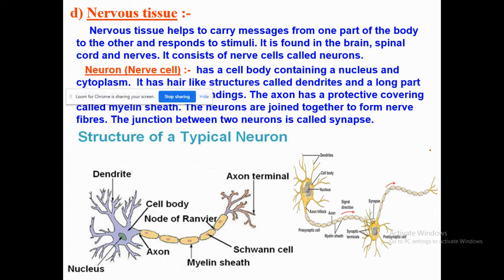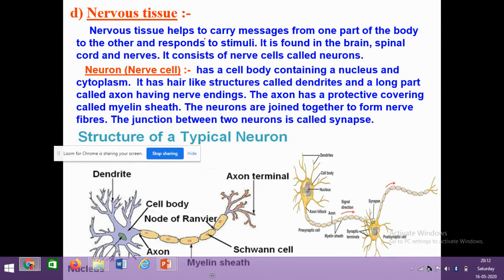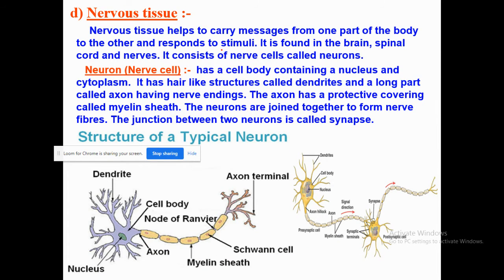Coming to nervous tissue, our last type of animal tissue. Nervous tissue helps to carry messages from one part of the body to another and respond to stimuli. Stimuli are any changes occurring in the environment — in the form of temperature like heat or cold, or light intensity. We are able to see with our eyes and smell with our nose. We have five sense organs which receive that information, and that information is called stimuli. Nervous tissue consists of nerve cells known as neurons.